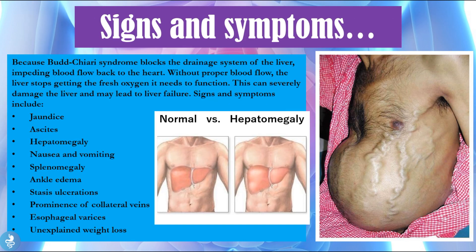So what are the signs and symptoms of Budd-Chiari syndrome? Because Budd-Chiari syndrome blocks the drainage system of the liver, impeding blood flow back to the heart, without proper blood flow the liver stops getting the fresh oxygen it needs to function. This can severely damage the liver and may lead to liver failure. Signs and symptoms may include jaundice, ascites, hepatomegaly, nausea and vomiting, splenomegaly, ankle edema, stasis alterations, prominence of collateral veins, esophageal varices and unexplained weight loss.